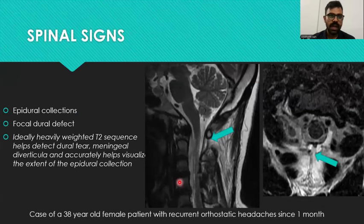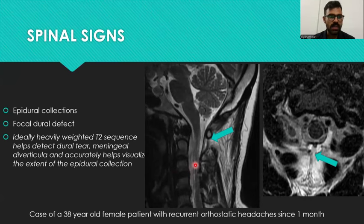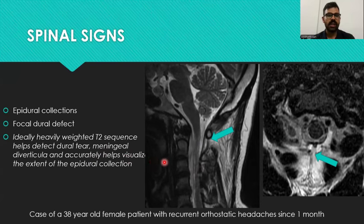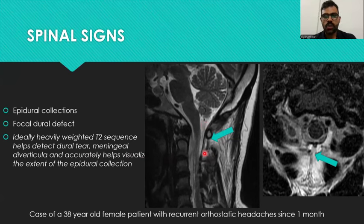Spinal signs include epidural collections or focal dural defects. Ideally, heavily T2-weighted sequences help in detecting the dural tear, the meningeal diverticula, and accurately visualize the extent of the epidural collection. This is demonstrated in a case of a 30-year-old male patient with recurrent orthostatic headache for one month, showing a C1-C2 dural vertebral defect.